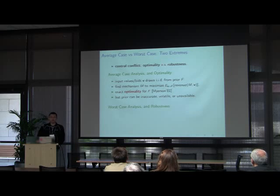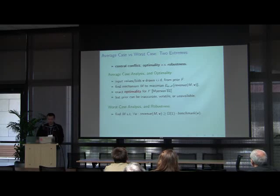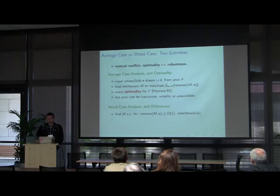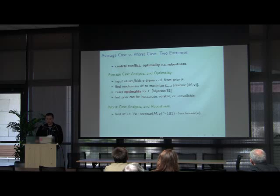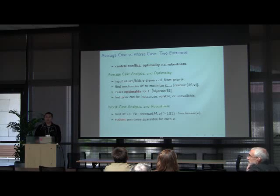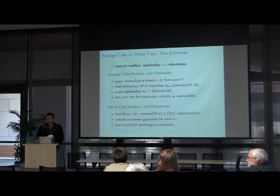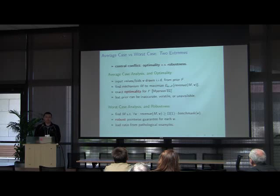In worst case analysis, we want robustness with no distribution at all. We look for mechanisms such that, point-wise for every input, the revenue of our mechanism is a constant factor approximation to some suitably defined revenue benchmark. It's really robust because the guarantee holds point-wise. But it's not very optimal because, due to the pessimistic nature of worst case analysis, the ratio we get is often very bad because of pathological examples. So it's hard to get both optimality and robustness.